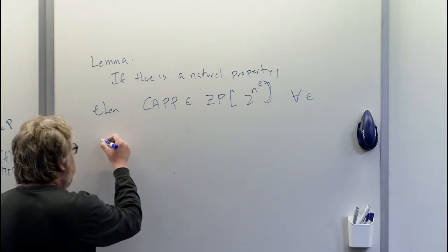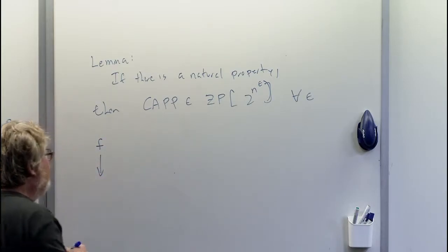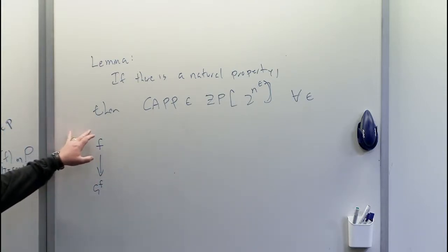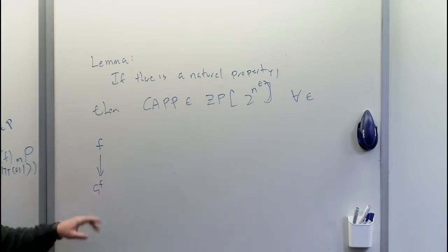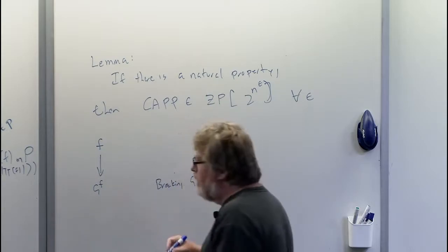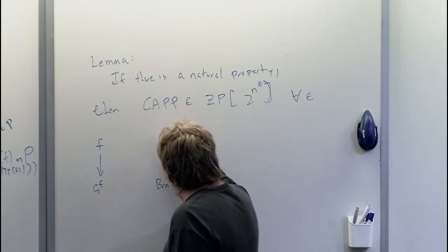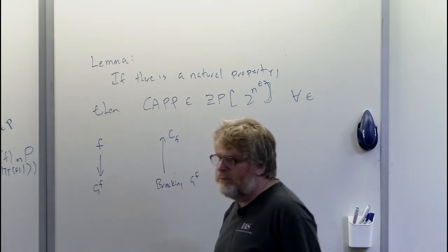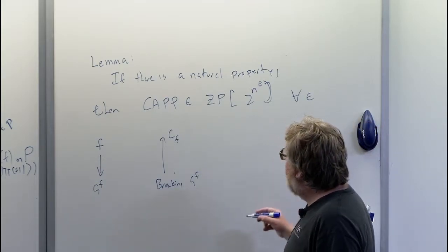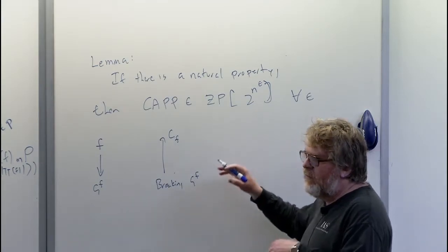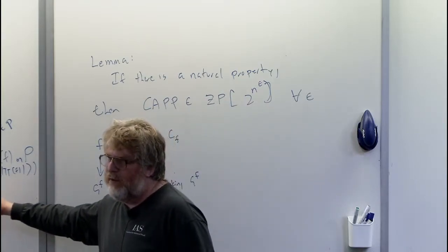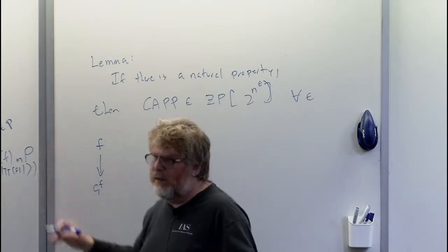Any way of breaking g sub F — distinguishing it from random — gives us a small circuit for F in the other direction. We have to use the low-end version of this because the natural property only guarantees superpolynomial hardness, not exponential hardness. Solving the distinguishing problem with 55% chance of success means: if you can tell the difference between the range of g and random strings with more than 55% probability, you can use such an algorithm to construct the circuit c sub F.